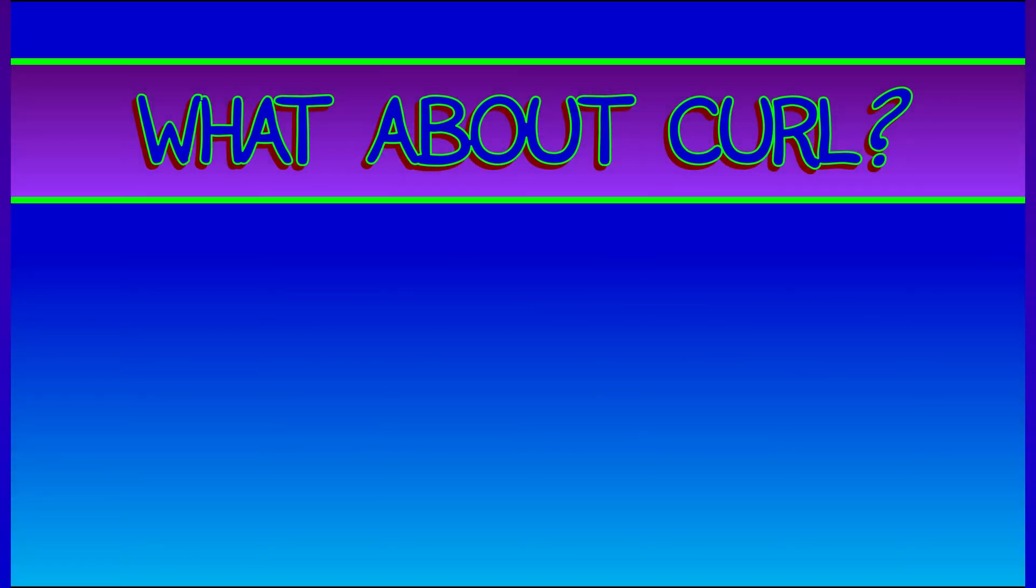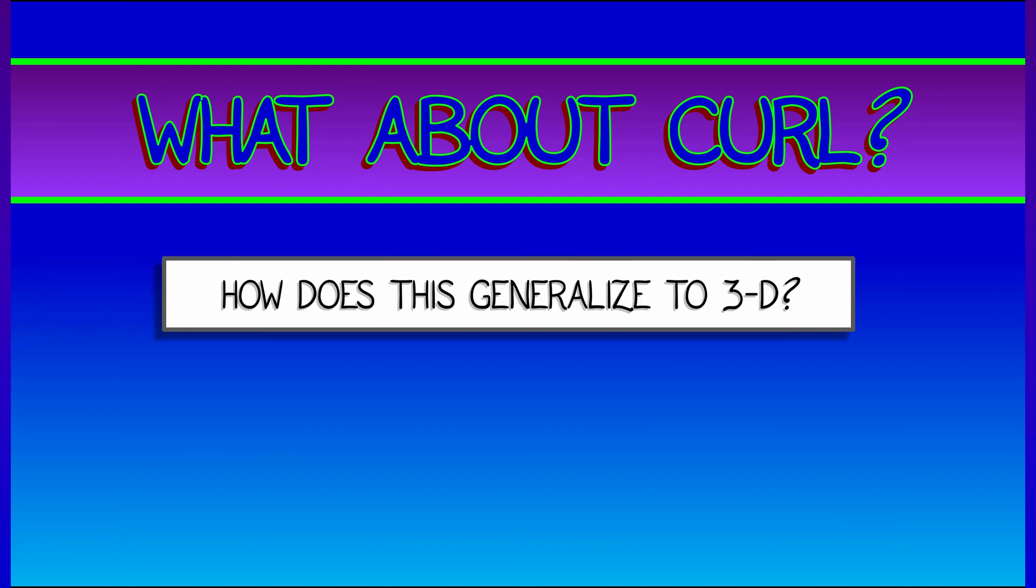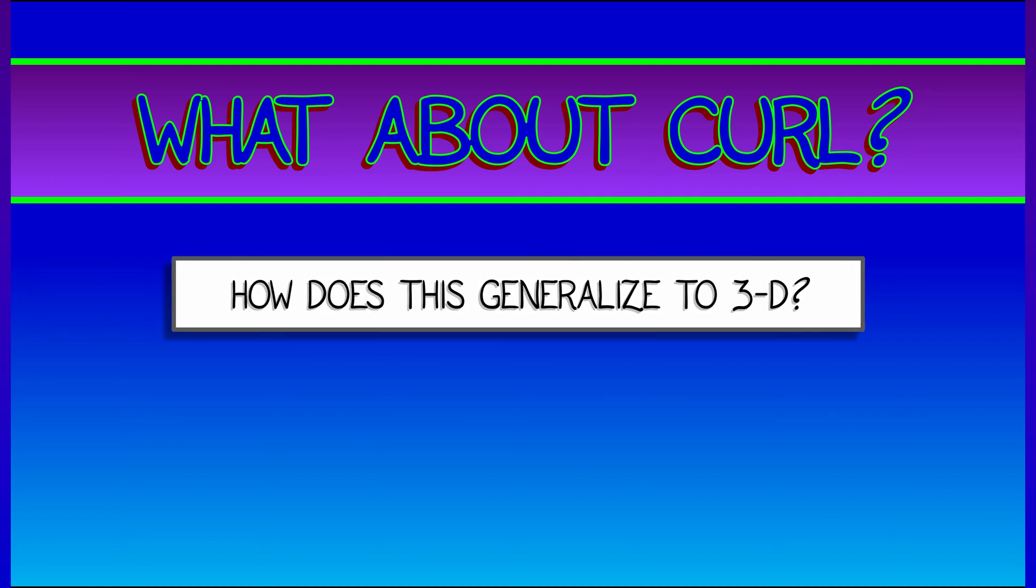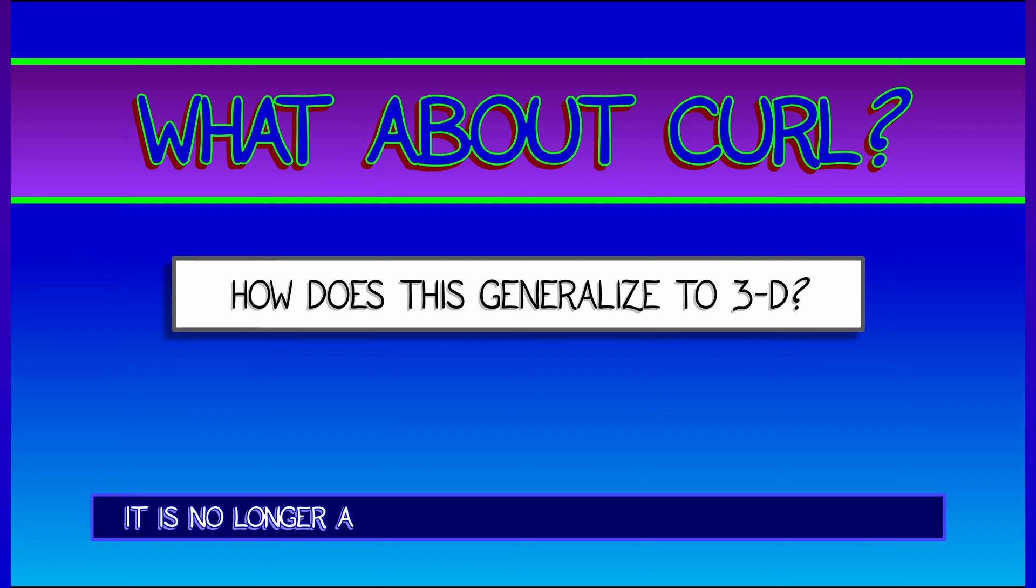Now that we've got divergence down, what do we do about curl? How does the curl generalize to a 3D vector field? Well, it gets complicated.